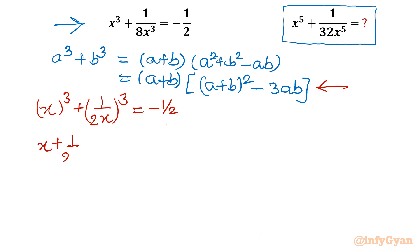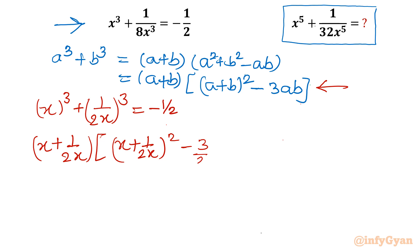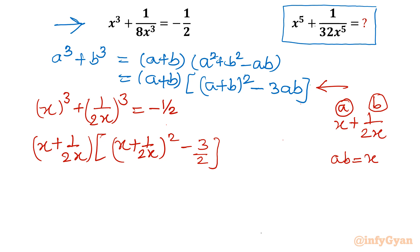Applying the formula: (x + 1/(2x)) times [(x + 1/(2x))² - 3ab]. Here a = x and b = 1/(2x), so ab = x · (1/(2x)) = 1/2. Therefore we write minus 3/2 for the 3ab term, giving us equal to -1/2.